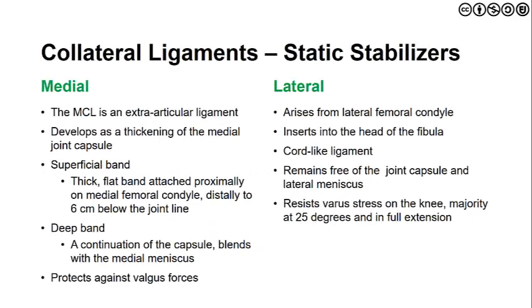While speaking of static stabilizers, we need to discuss the medial and lateral collateral ligaments, also known as the tibial and fibular collateral ligaments. The medial MCL is an extra-articular ligament that develops as a thickening of the medial joint capsule, making it continuous with the joint capsule through the medial meniscus. The superficial band is thick and flat; the deep band is a continuation of the capsule and blends with the meniscus, protecting against a valgus force. The lateral or fibular collateral ligament arises from the lateral femoral condyle and inserts into the head of the fibula. It is cord-like, remains free of the joint capsule and the lateral meniscus, and resists varus force, particularly from approximately 25 degrees of flexion into full extension.